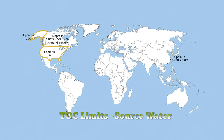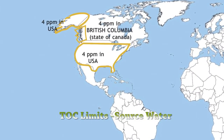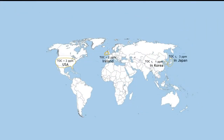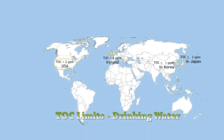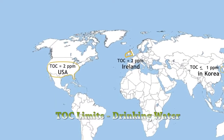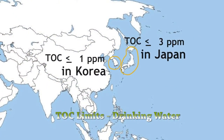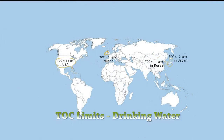Several regulators have defined TOC limits of 4 to 5 ppm for source water — for instance, 4 ppm in the US and British Columbia, and 5 ppm in Korea. TOC limits for drinking water are defined between 1 and 3 ppm — 2 ppm in the US and Ireland, 1 ppm in Korea, and 3 ppm in Japan. These TOC limits help control carcinogenic disinfection by-products like trihalomethane, generated during disinfection by chlorination.